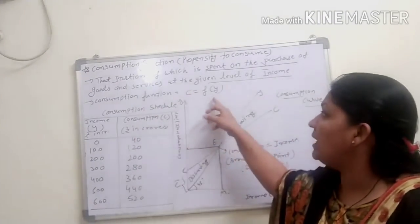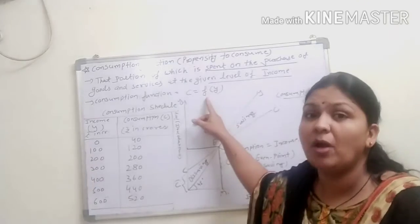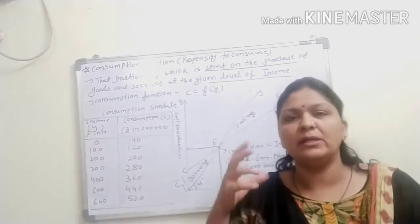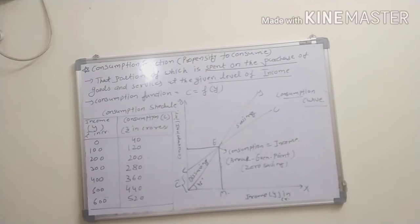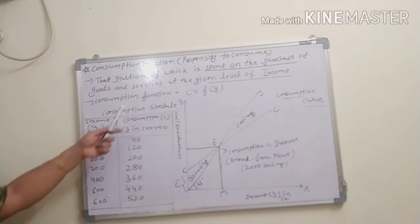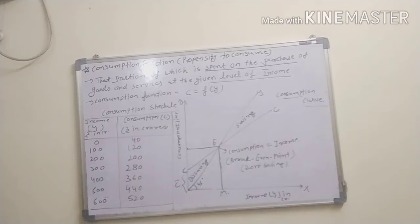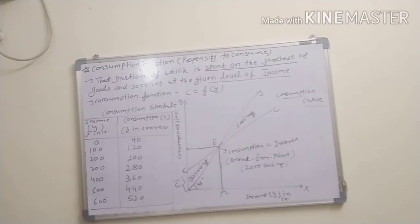Consumption function equals C = f(Y), where Y is the national income. Consumption function refers to the functional relationship between consumption and national income. Here C stands for consumption, F stands for the functional relationship, and Y stands for national income. Consumption function represents the willingness of the household to purchase goods and services at the given level of income during the time period.